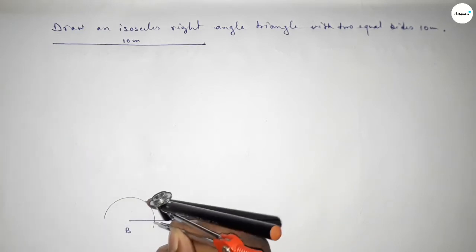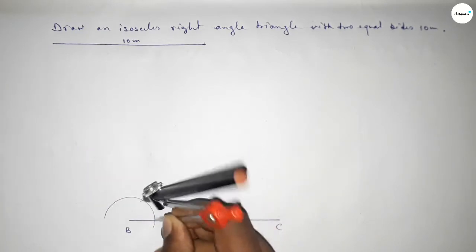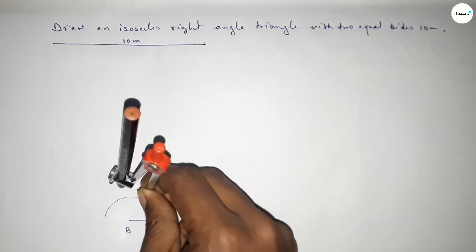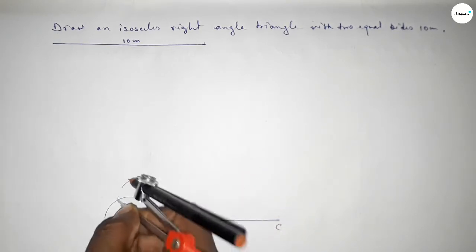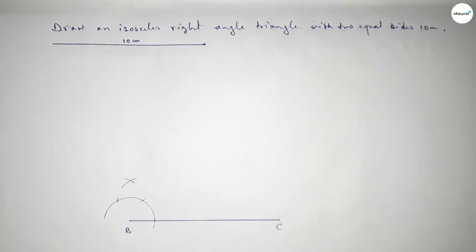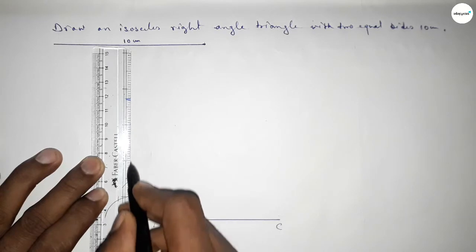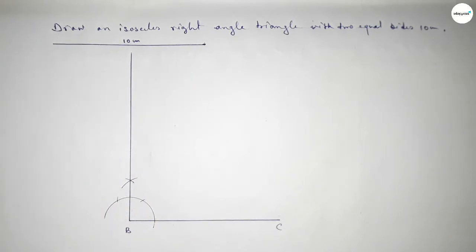Again with the same length, putting the compass here and taking the same length, cut here. Putting the compass here, cut here and drawing an arc. Both the curves intersect at a point — now joining this to get a 90 degree angle.